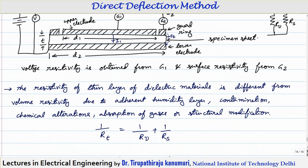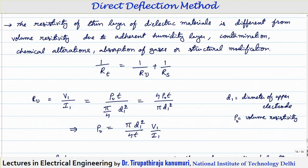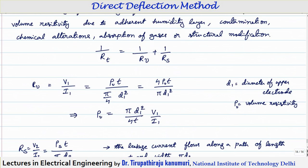To calculate volume resistance: volume resistance = V divided by current through galvanometer 1. Using R = ρL/A, this equals rho_V (volume resistivity) multiplied by thickness T, divided by the area of the upper electrode pi/4 × D1². Rearranging: rho_V = (pi × D1²)/(4T) × (V1/I1), where D1 is the diameter of the upper electrode and rho_V is the volume resistivity.